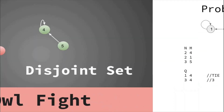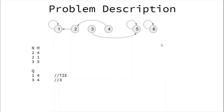So let's see what the problem is. You are given N and M — N is the number of owls and M is the number of relationships. For example, the first relationship is 2 and 4, meaning 2 and 4 are friends, and 2 and 1 are also friends. So if 2 and 4 are friends and 2 and 1 are friends, then 1 and 4 are also friends. This structure represents the relationship among 1, 2, and 4, forming a single set. So 1 is friend of 2 and 4, 4 is friend of 1 and 2, and 3 is friend of 5.